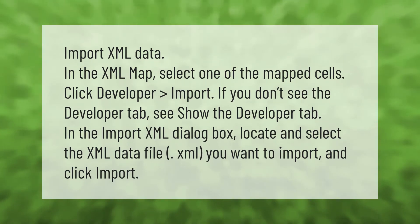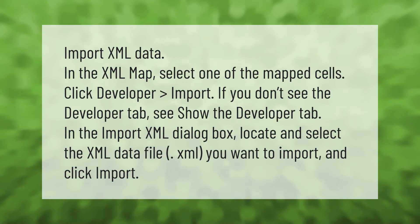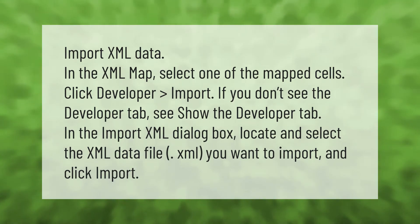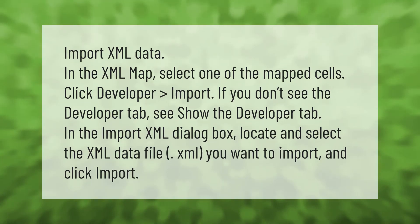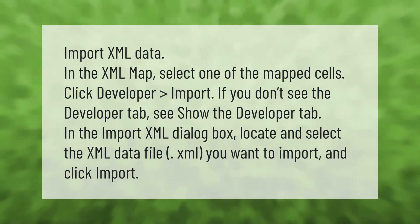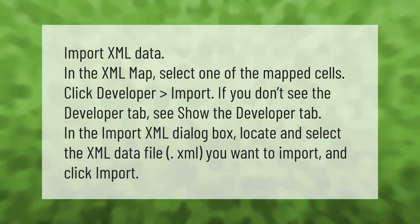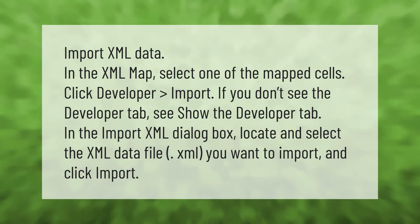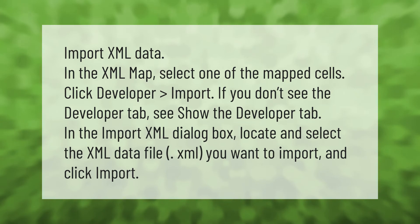To import XML data using the XML map, select one of the mapped cells, then click Developer and then Import. If you don't see the Developer tab, check how to show the Developer tab. In the Import XML dialog box, locate and select the XML data file you want to import, then click Import.